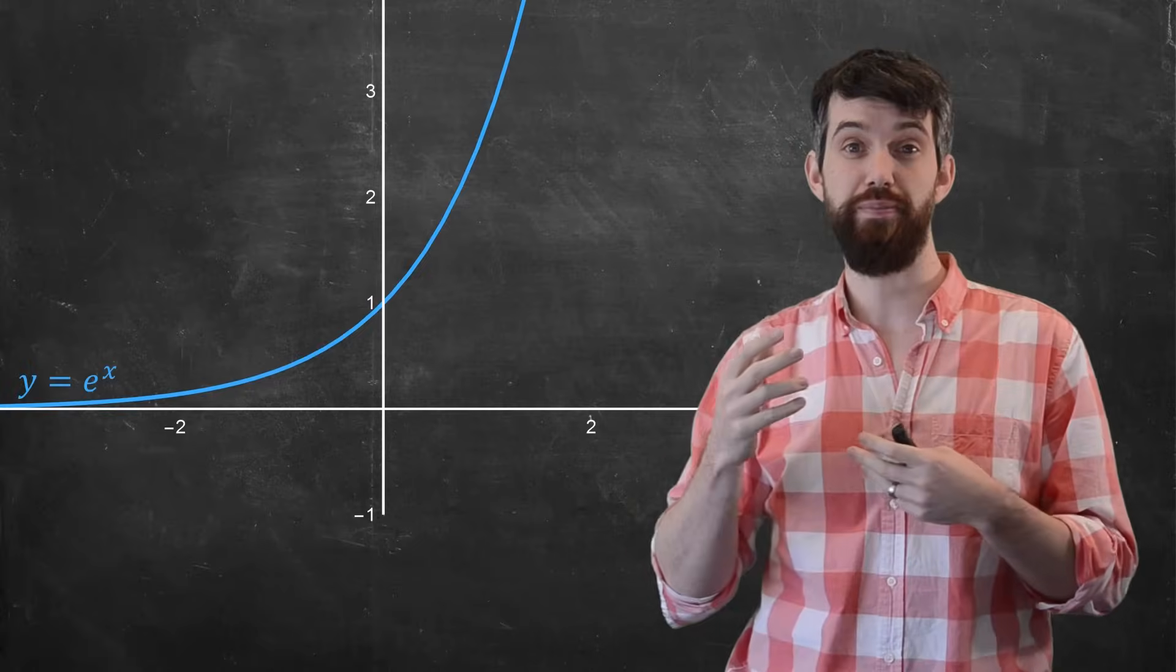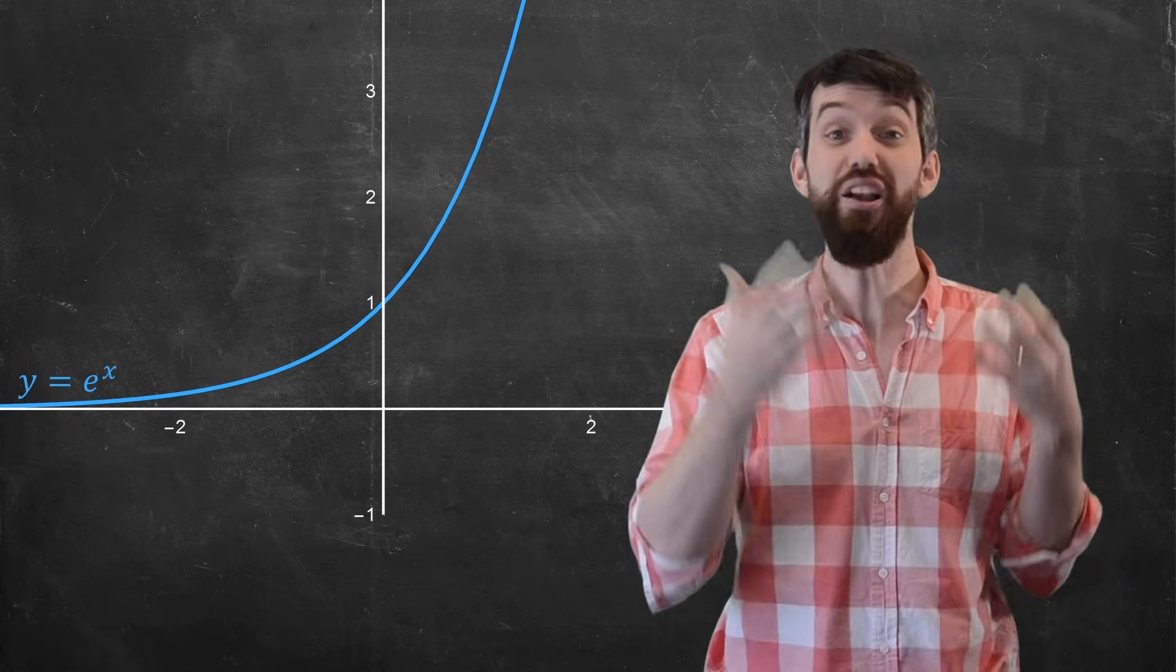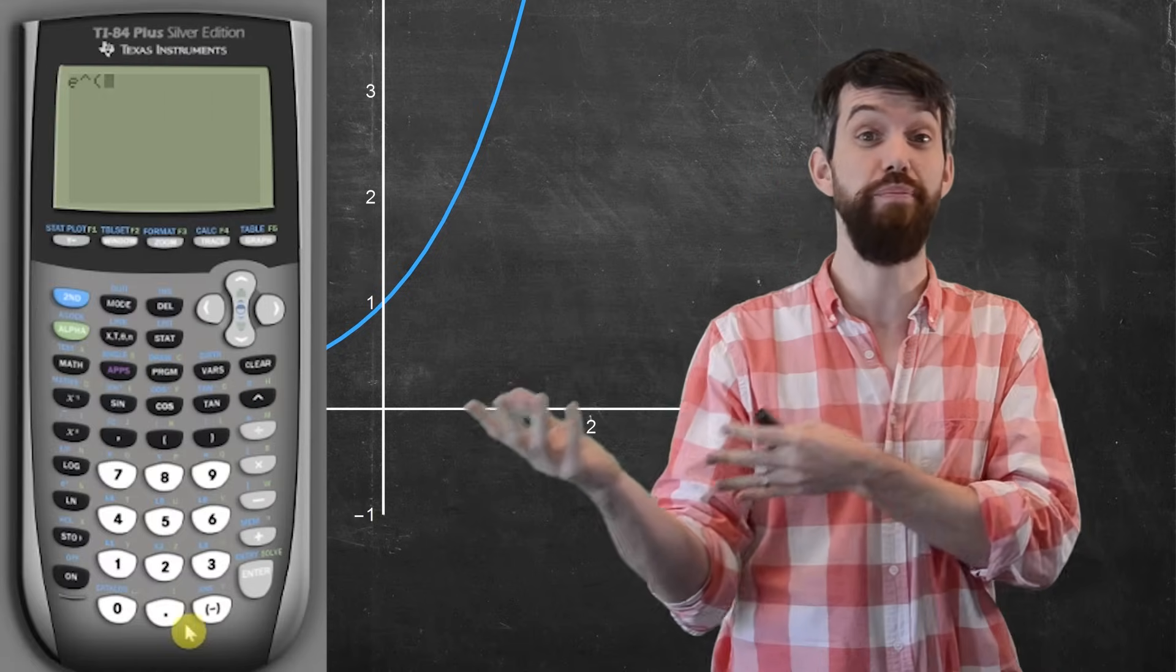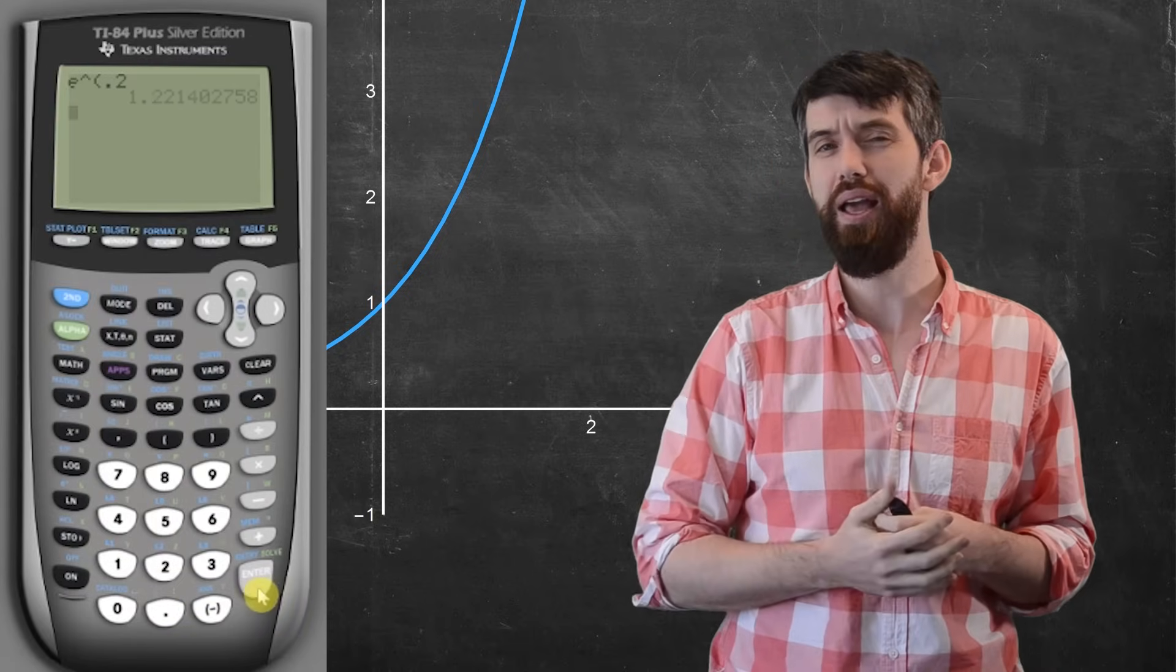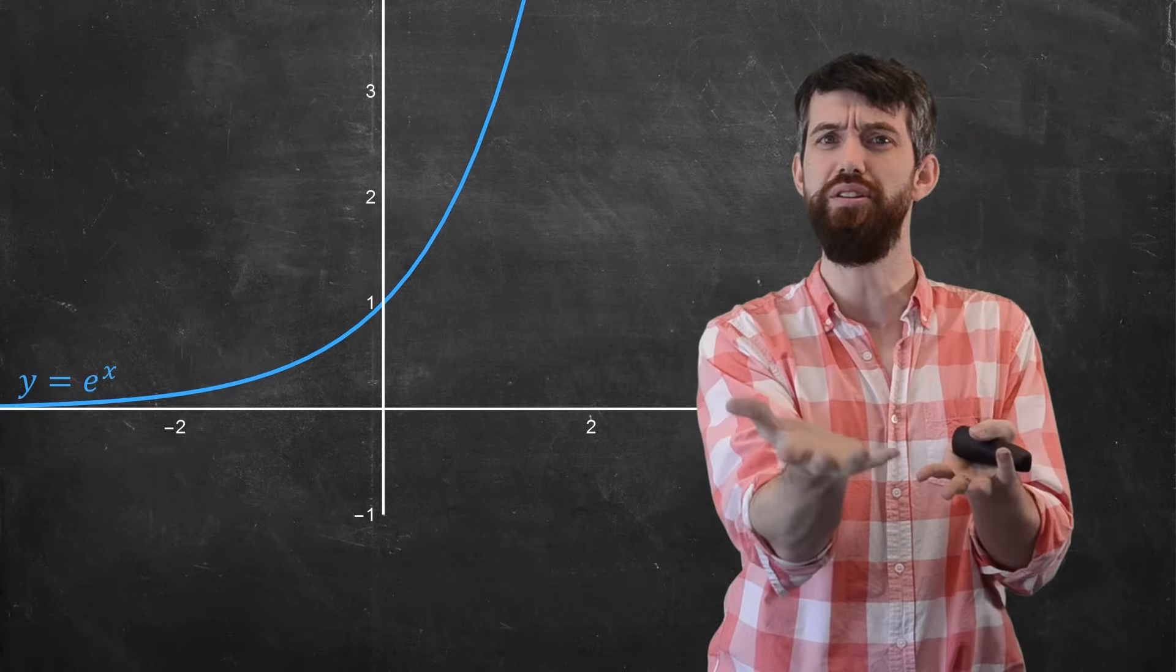Consider the graph of e to the x. If I wanted to compute a value like e to the 0.2, I could go to some calculator and just plug it in. But how does the calculator know what e to the 0.2 is?